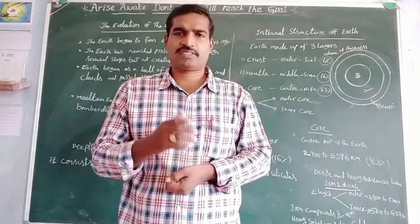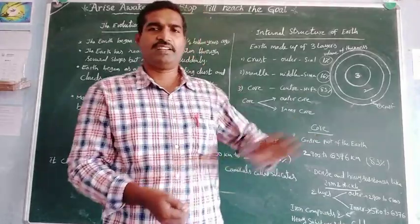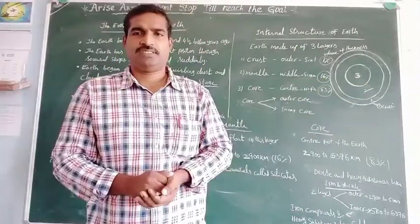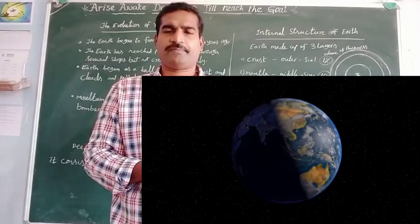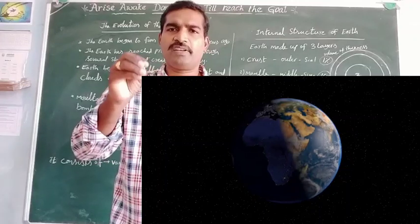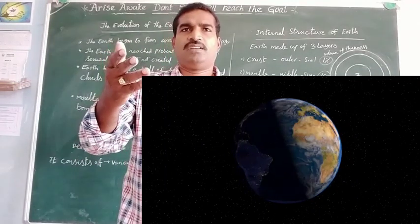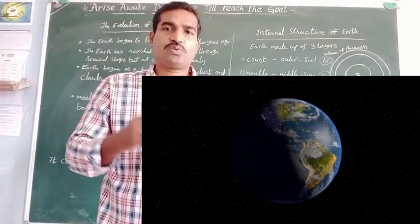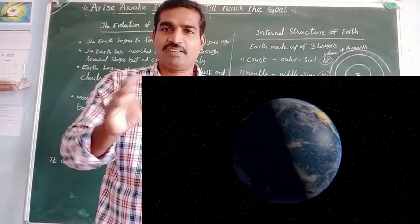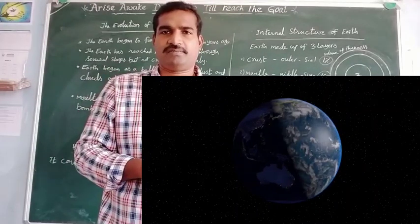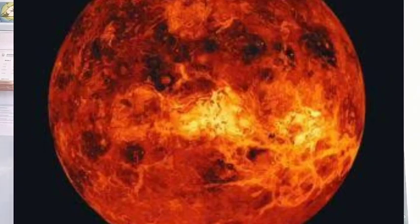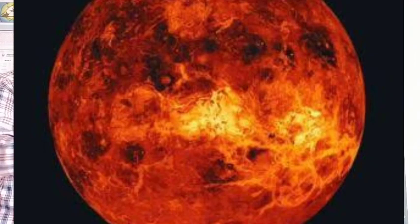In this topic, we will discuss about the evolution of the Earth and the internal structure of the Earth. We will discuss the evolution of the Earth. The Earth began to form around 4 billion years ago. It passed through a molten stage. What is a molten stage? Molten stage means hot liquid form.